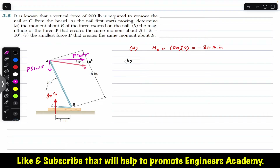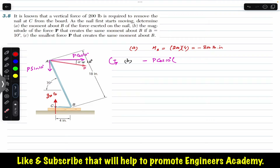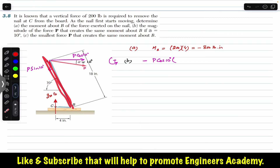Now we find the moment produced by these two components. The P cos(10°) component produces a clockwise moment about point B, which is negative. Its moment arm is the perpendicular distance from B, which is the sine component of the 18-inch bar AB. Since AB makes 70 degrees with the horizontal, this moment arm is 18 sin(70°).